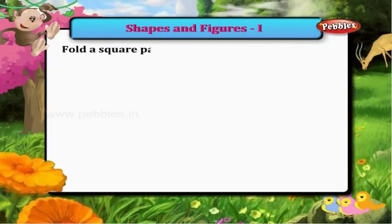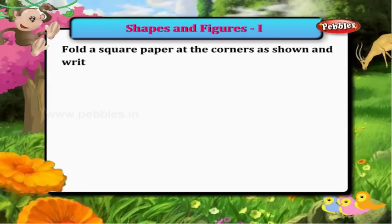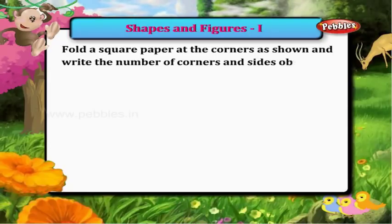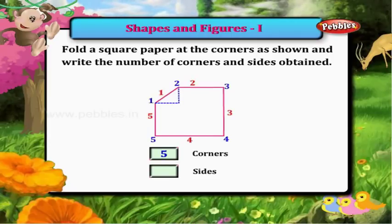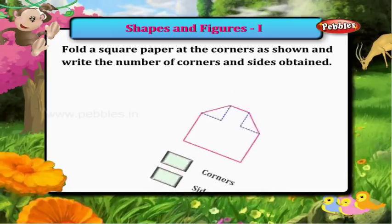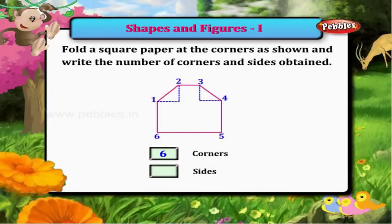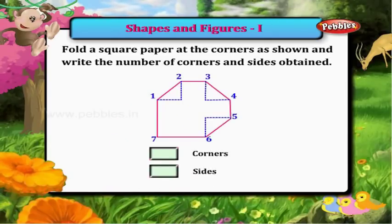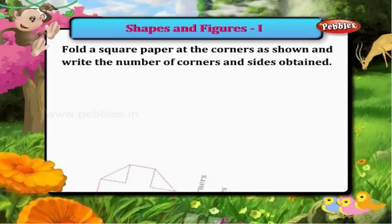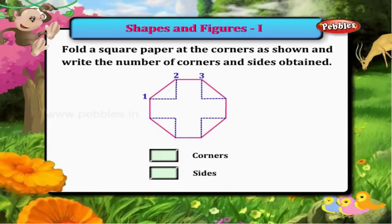Fold a square paper at the corners as shown and write the number of corners and sides. In this figure there are six corners and six sides. In this figure there are six corners and seven sides. In this figure there are eight corners and seven sides. In this figure there are eight corners and eight sides.